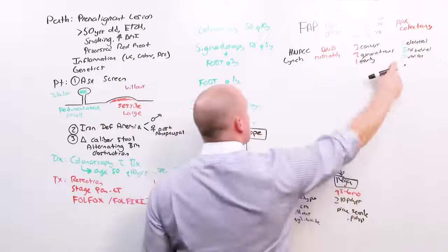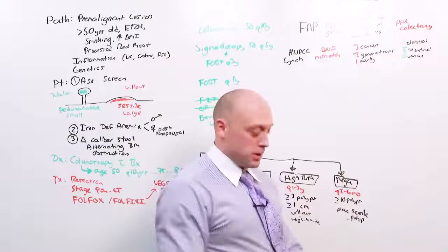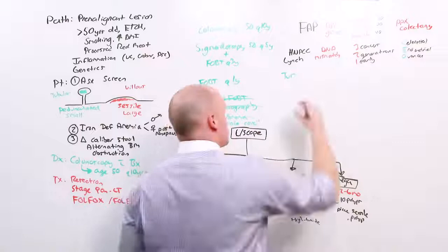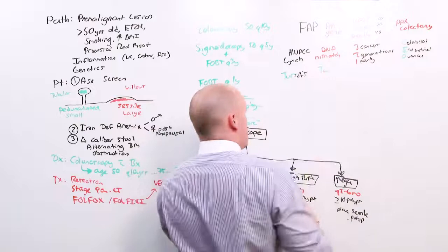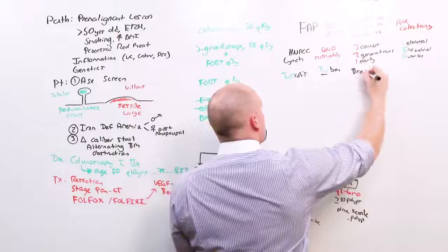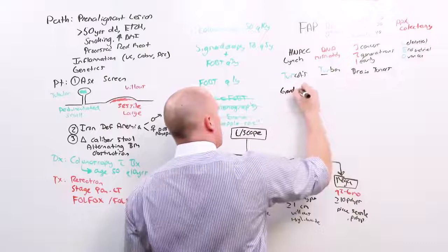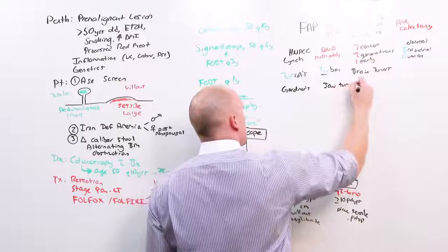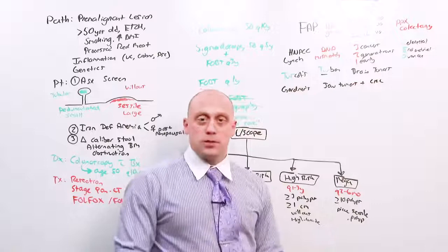There's two others that you just kind of have to know they're sort of low yield but know they're there because they're going to come up at you as distractors. It's Turcot's and Gardner's. Turcot's, I think of wearing a turban on my head and so I get brain tumors along with colorectal cancer. And Gardner's is the other one where you have jaw tumors along with colorectal cancer.